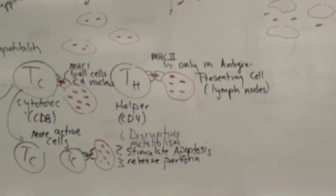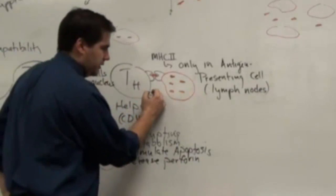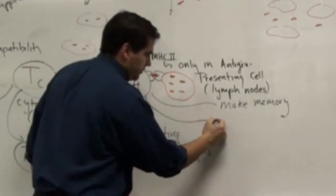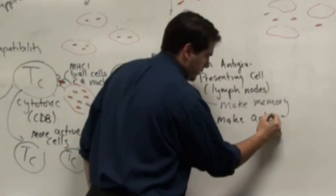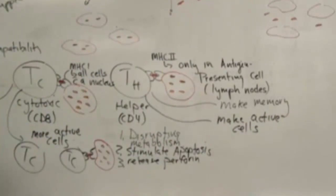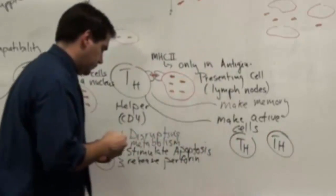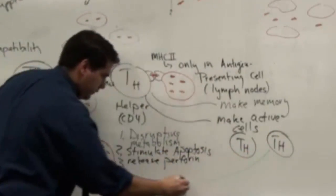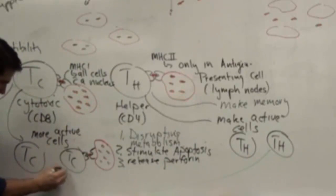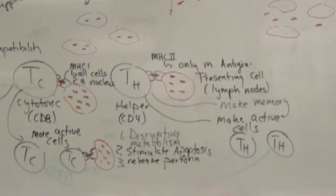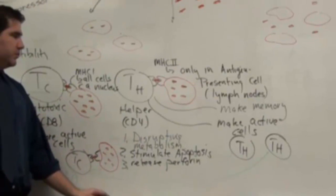And maybe before I say exactly why you have that, I'll say once this TH cell finds its infected target, it's going to make memory, it's also going to make active cells. And what these active cells are going to do is kick these guys in the pants. It's going to stimulate these. It's going to release something called an interleukin. A leukocyte is a white blood cell, so interleukin is a signal between white blood cells. It's going to tell these TC cells, pick it up a notch.